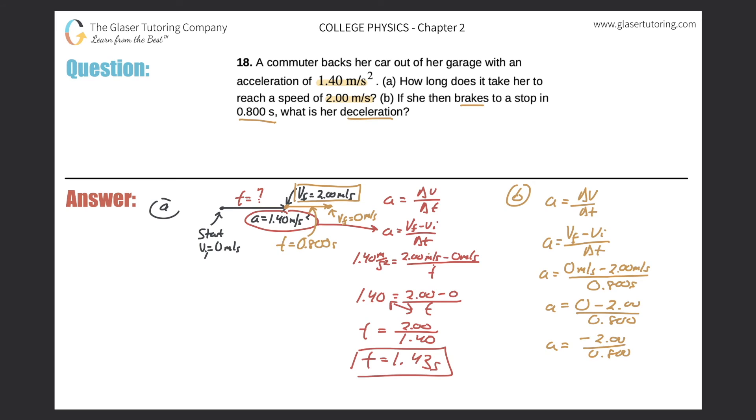So the numerator here should be negative 2.00 over 0.800. And as we said before, this should be negative. So if the object is slowing down in the positive direction, it therefore has a negative acceleration. So negative 2 divided by 0.8 works out to be negative 2.5.